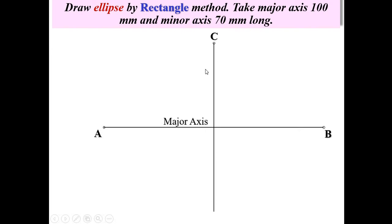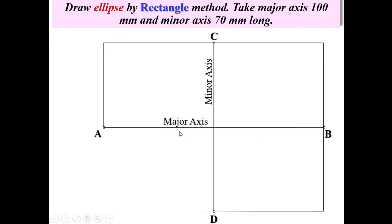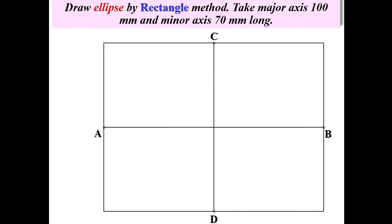Then draw CD as a vertical line — that is your minor axis. This center point is the midpoint of AB as well as the midpoint of CD. Now draw the rectangle. This method is known as the rectangle method because we initially draw the rectangle, which helps you remember the name of the method.